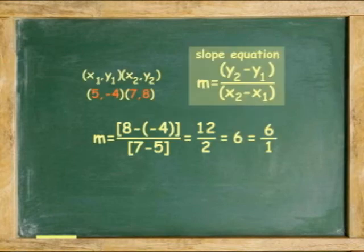Another example. Find the slope of the line passing through points (5,-4) and (7,8). If y₂ equals 8 and y₁ equals -4, then 8 minus -4. If x₂ equals 7 and x₁ equals 5, then 7 minus 5.